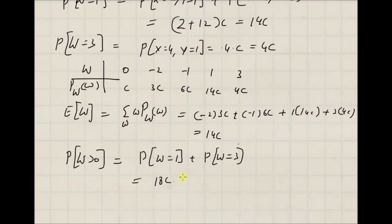Thus, given a joint probability mass function of two random variables, it is possible to calculate the probability mass function of a new random variable which is a function of the original random variables — in this case, w equal to x minus y. Thanks for watching.